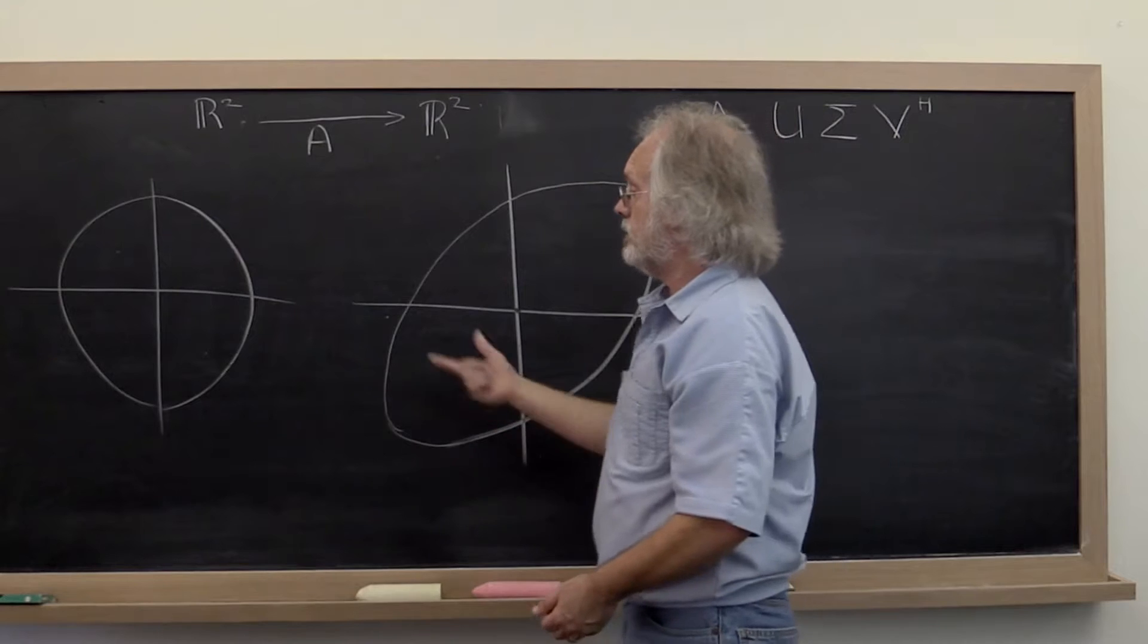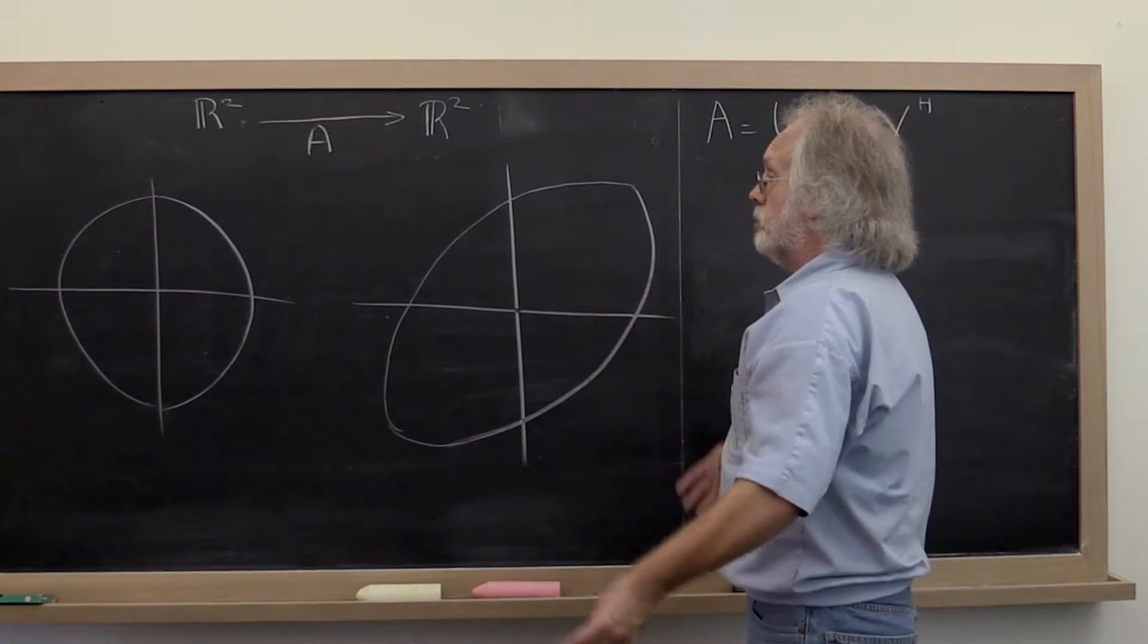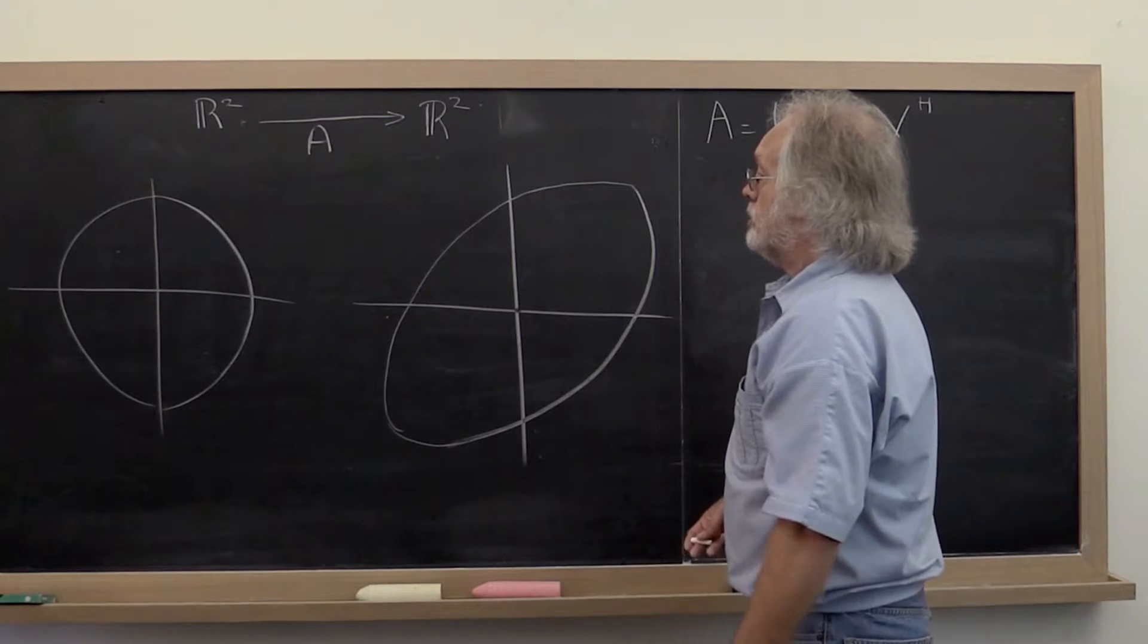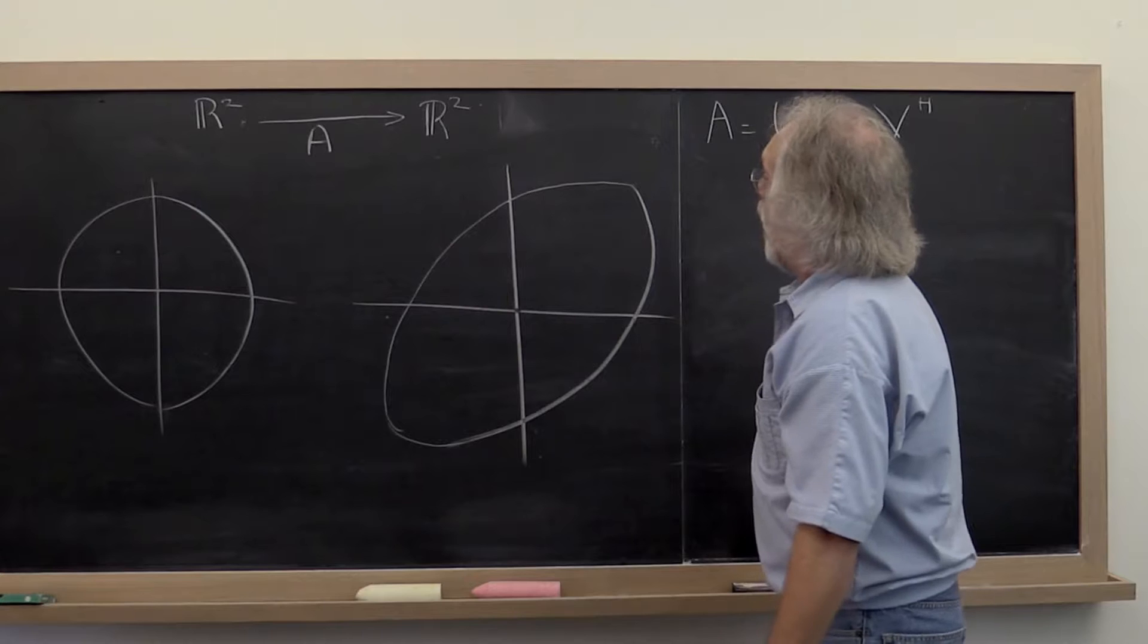And that comes from the fact that you're taking linear combinations. And matrix vector multiply preserves the linear transformation, the linear combination.